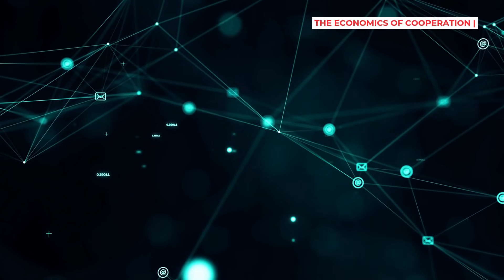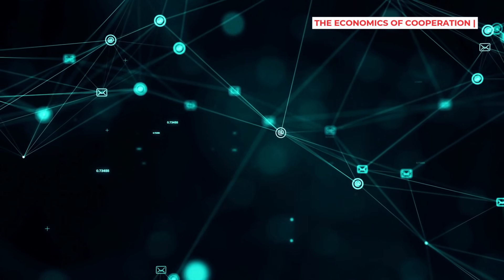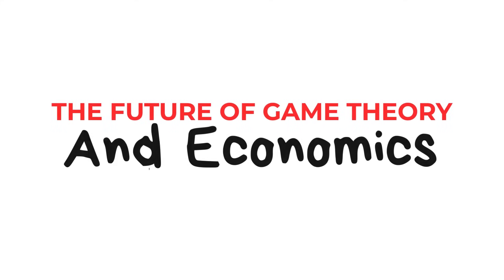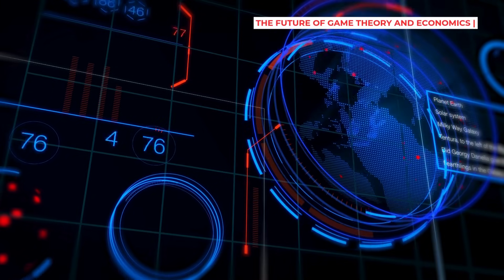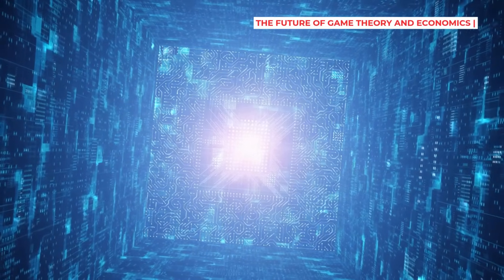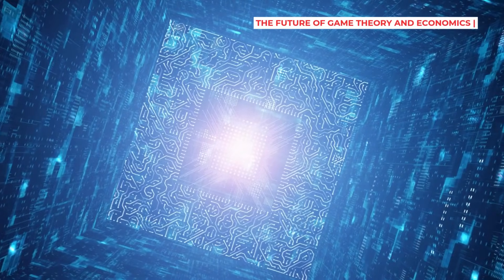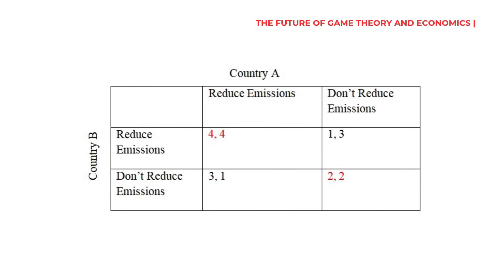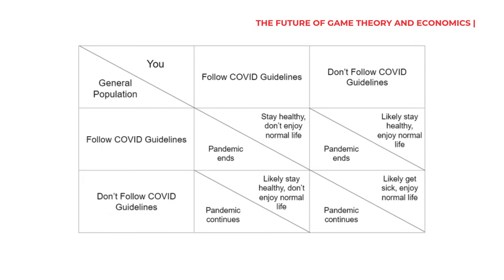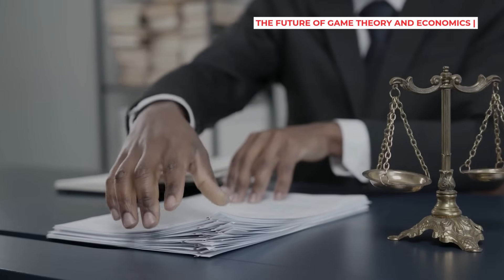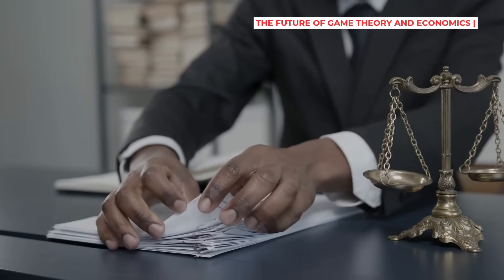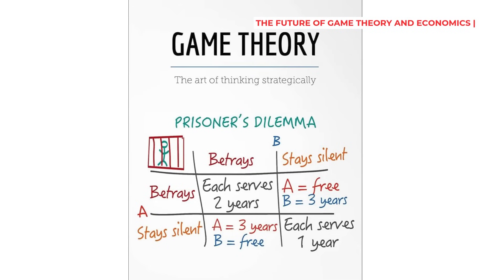As technology connects our world in new ways, the choices we make today will determine our cooperative future. Right now, computers are using game theory to analyze your behavior and influence your decisions. The future of these invisible games is already here, and the stakes have never been higher. From climate change — the ultimate global Prisoner's Dilemma — to pandemic responses to economic inequality, game theory helps explain our biggest challenges. The hopeful message is that we can design better rules for better outcomes. By understanding these invisible games, we gain a superpower: the ability to change the game itself.